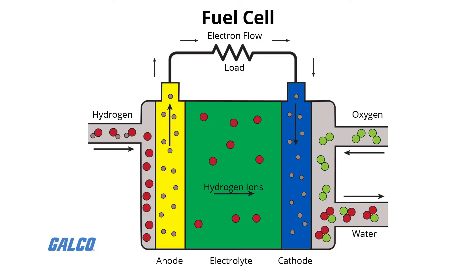Generally, hydrogen atoms enter a fuel cell at the anode, where a chemical reaction strips them of their electrons. Those hydrogen atoms are ionized and carry a positive electrical charge. The negatively charged electrons provide the current through wires to do work.